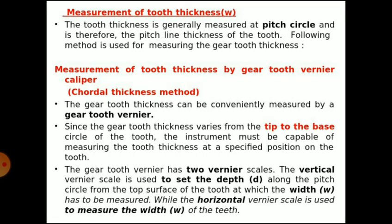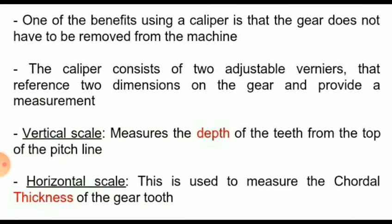Since the gear tooth thickness varies from the tip to the base circle, the instrument must be capable of measuring the tooth thickness at a specified position on the tooth. The gear tooth vernier has two vernier scales: the vertical vernier scale is used to set the depth along the pitch circle from the top surface of the tooth at which the width is to be measured, while the horizontal vernier scale is used to measure the width. The vertical scale measures depth and the horizontal scale measures thickness.